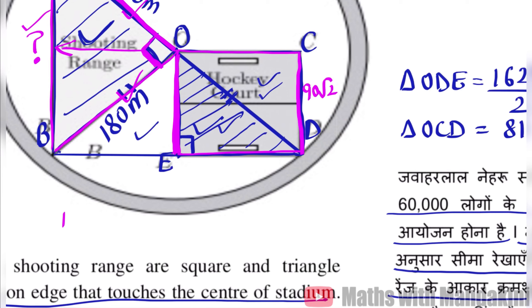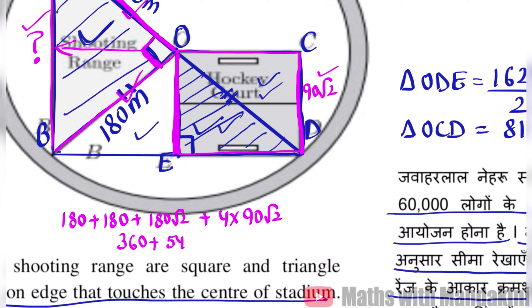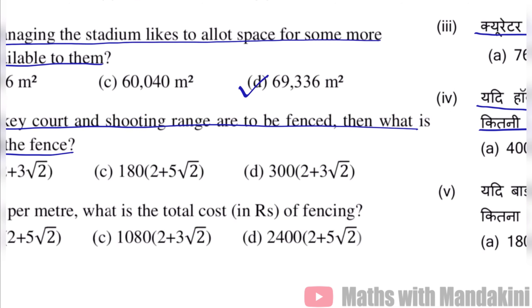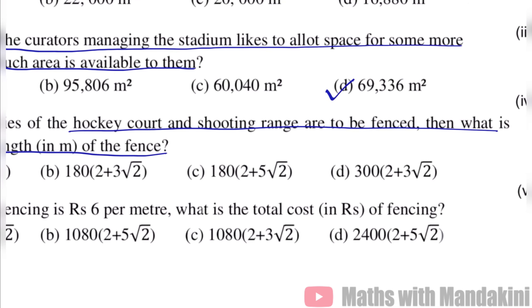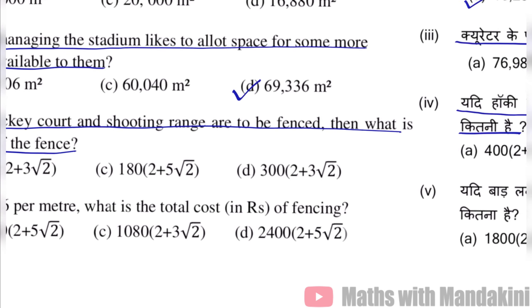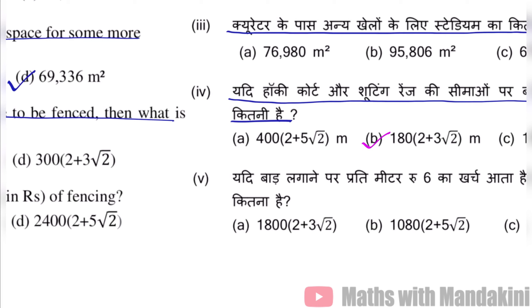For the triangle sides: 180 plus 180 plus 180√2. For the square, the perimeter is 4 into side, which is 4 into 90√2. So total fencing equals 360 plus 540√2. Taking 180 common, we get 180(2 + 3√2) meters. The correct answer is option B: 180(2 + 3√2) meters.